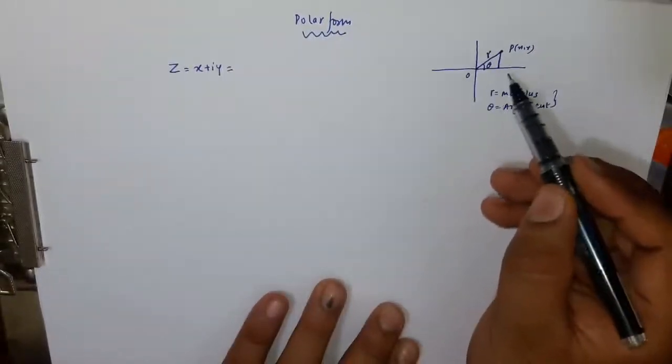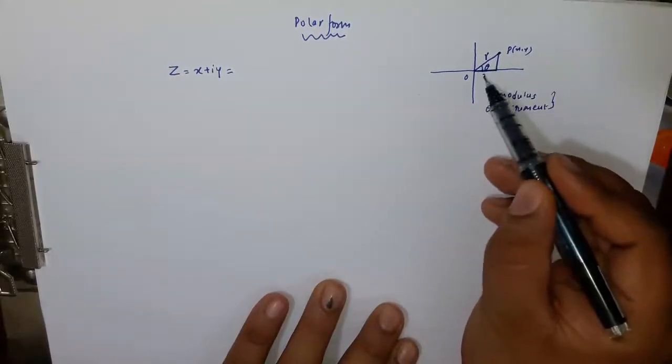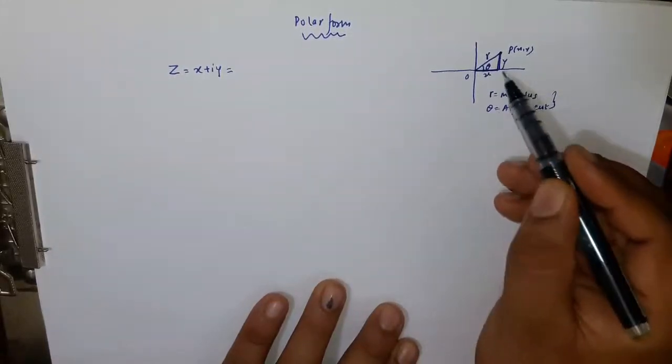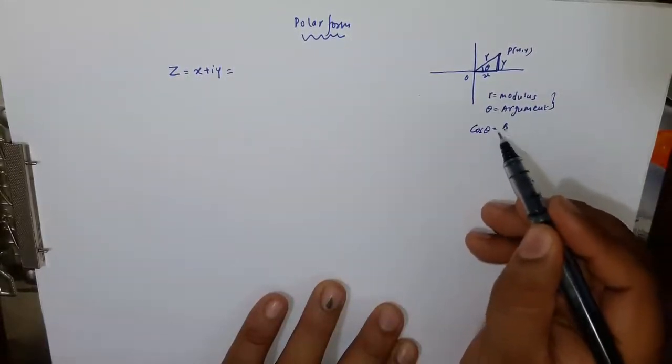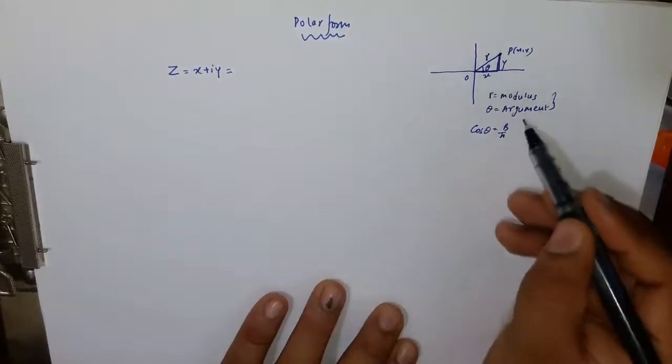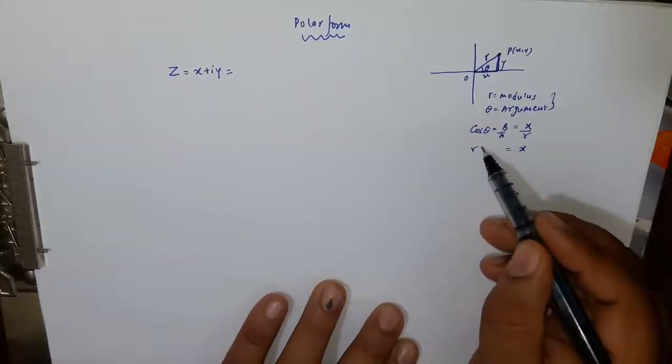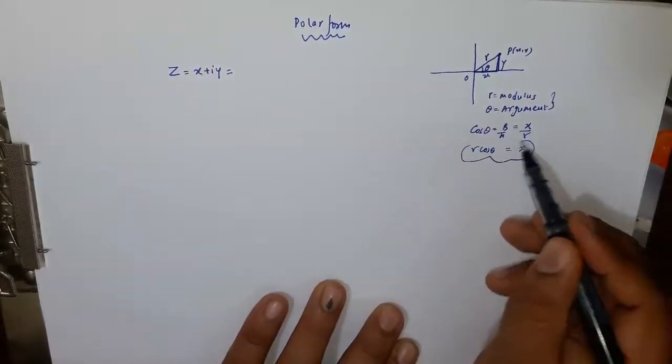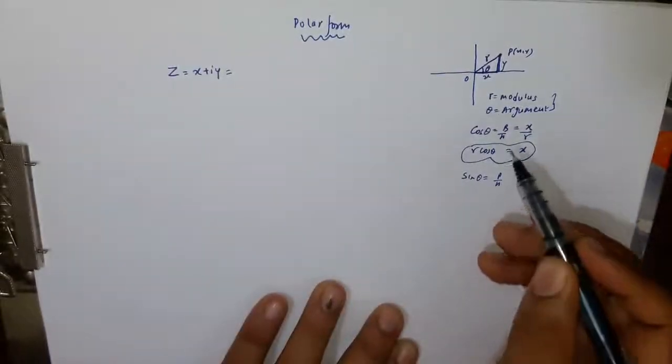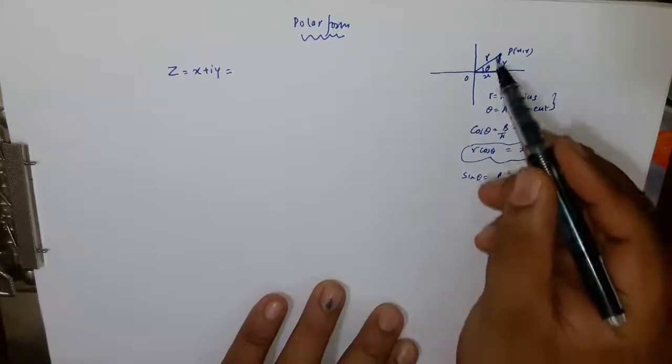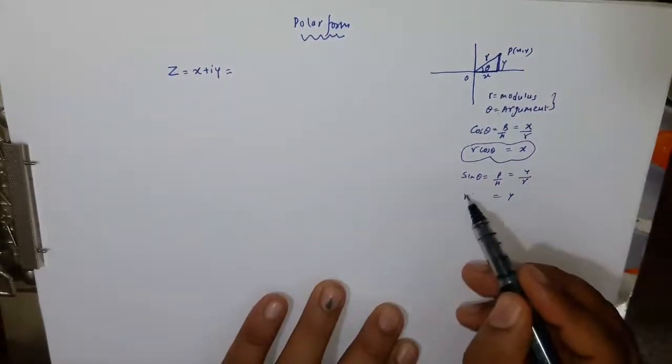We will apply the concept of trigonometry here. Because this point is P x, y, this distance will be x and this distance will be y. So if you apply trigonometry here, then we can say that cos theta is always base upon hypotenuse. So base is this x and hypotenuse is this R. So x can be written as R cos theta. And similarly, sin theta is perpendicular by hypotenuse. So perpendicular is Y here and hypotenuse is R. So Y can be written as R sin theta.